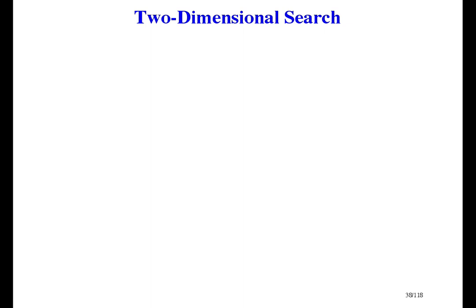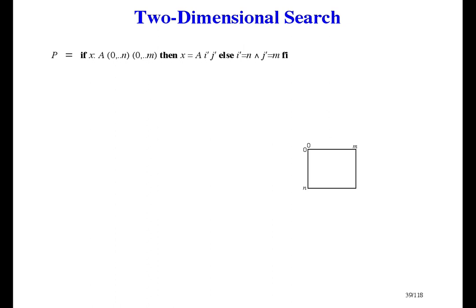Two-dimensional search is a good example. If you are searching for an item in a two-dimensional array, there are two nested loops. And when you find the item, you want to jump out of both loops. Here's a specification and a picture. Array A is N by M, and we're looking for item X. If X is anywhere in the array, then the final values of variables I and J will tell us where. Array A, dimensions N and M, and item X are all constants.